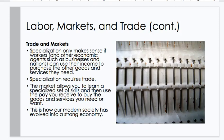Labor markets and trade continue. Trade and market. Specialization only makes sense if workers and other economic agents such as businesses and nations can use their income to purchase the other goods and services they need. Specialization requires trade. The market allows you to learn a specialized set of skills and then use the pay you receive to buy the goods and services you need or want. This is how our modern society has evolved into a strong economy.